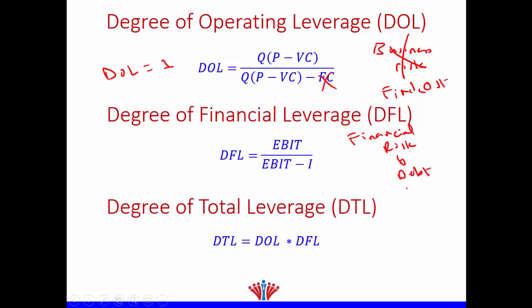In this formula, I give you only debt. Therefore, what will happen if there is no financial risk, which means there is no debt? Therefore, the company is not going to pay interest. Therefore, our numerator will be equal to the denominator. Consequently, our degree of financial leverage is equal to 1. So if the degree of financial leverage is equal to 1, it means that there is no financial risk.